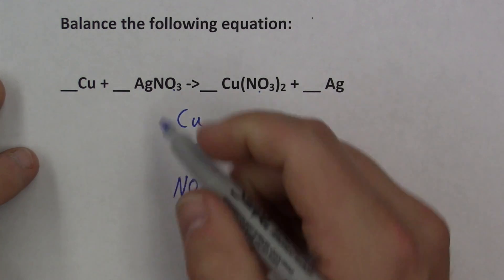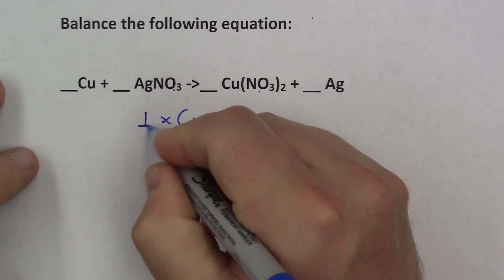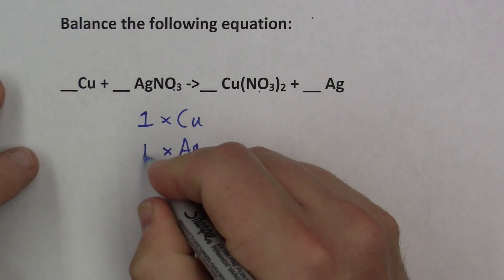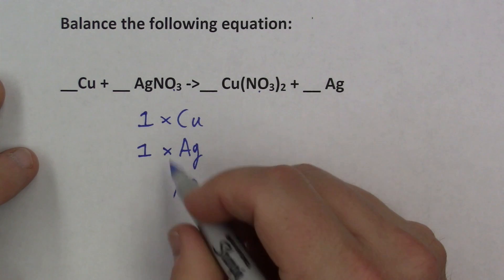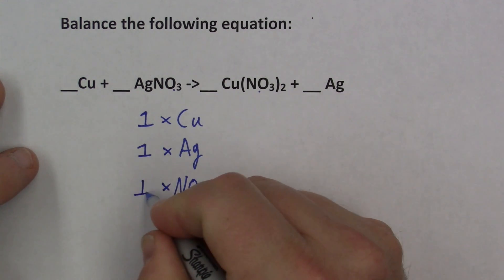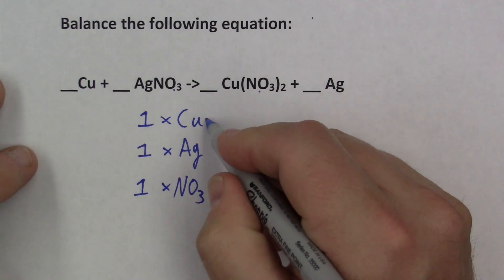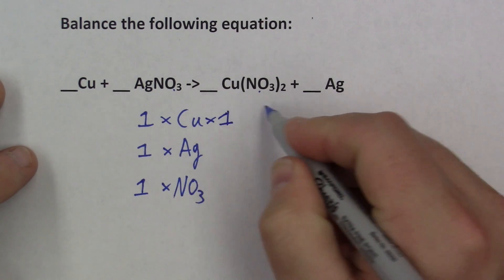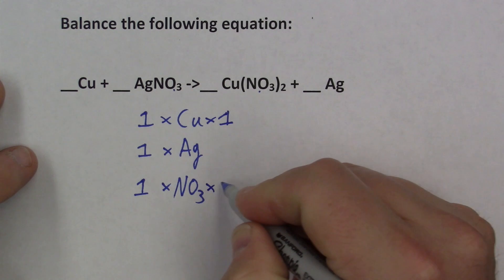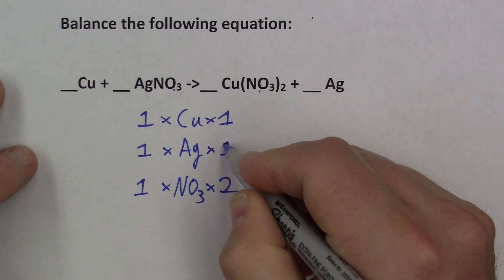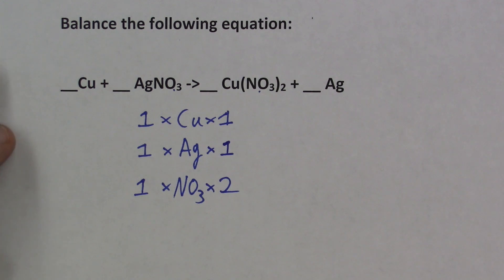Now, on the left-hand side we have one copper, so one times copper. We have one silver, so one times silver. We have one NO3, so one times NO3. On the right-hand side we have one copper. But now we have two NO3s. Let's write that down. We have two NO3s and then one silver.